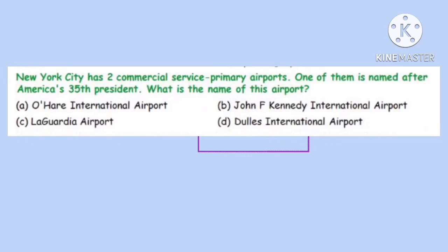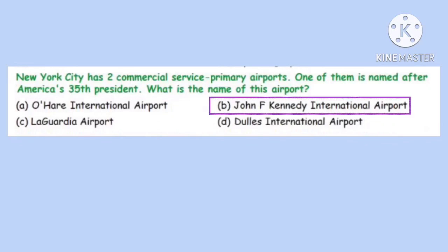Question 3. New York City has two commercial service primary airports. One of them is named after America's 35th president. What is the name of this airport? The 35th president of America was John F. Kennedy. Hence the answer is option B: John F. Kennedy International Airport.